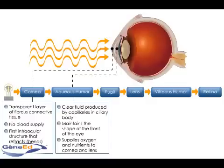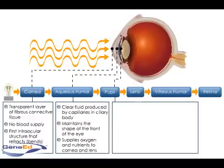After passing through the aqueous humor, light continues through the pupil, the circular opening located in the center of the iris. The iris is the colored portion of the eye, which contains two sets of smooth muscle fibers that contract to control the diameter of the pupil.